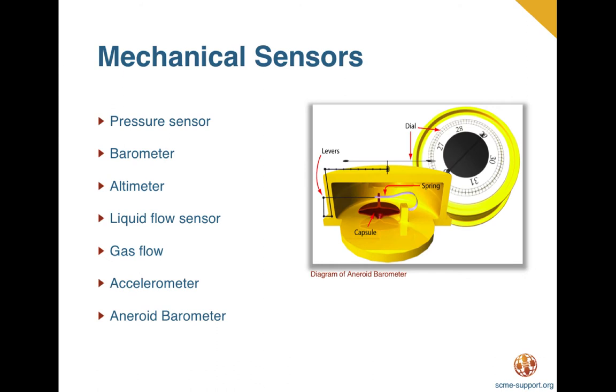Another type of sensor is the mechanical sensor. Mechanical sensors use movement of some type to sense a specific parameter such as pressure, the flow rate of a fluid, or acceleration. An example is the aneroid barometer shown here. An aneroid barometer senses changes in atmospheric pressure by the expansion or compression of an aneroid capsule, a thin disc-shaped capsule, usually metallic and partially evacuated of gas.